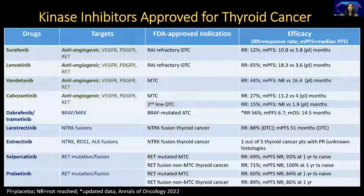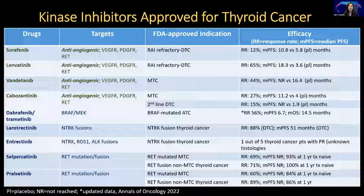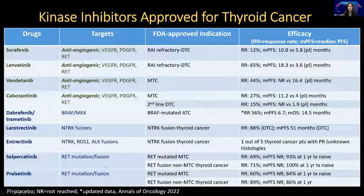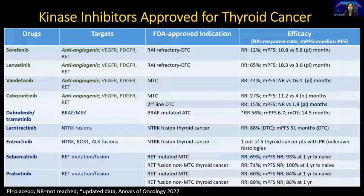This is now what we have for patients who no longer respond to radioiodine — and for medullary thyroid cancer where we don't give radioiodine. In green, the anti-angiogenic drugs: sorafenib and lenvatinib for differentiated thyroid cancer, vandetinib and cabozantinib for medullary thyroid cancer. Cabo now also has a second-line indication in differentiated thyroid cancer. The drugs in blue are more molecularly targeted: BRAF/MEK inhibitors for BRAF-mutated ATC — this is approved — larotrectinib and entrectinib are NTRK inhibitors for NTRK fusion thyroid cancers, and selpercatinib and pralsetinib are the RET inhibitors for RET mutations and RET fusions.